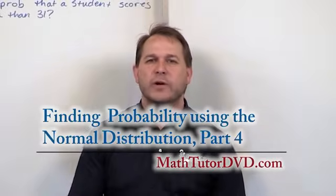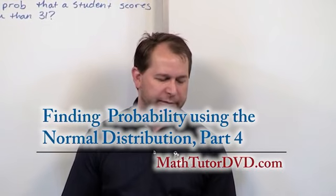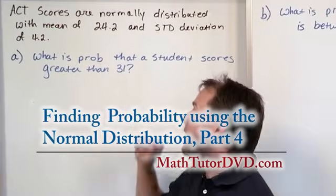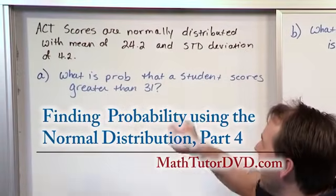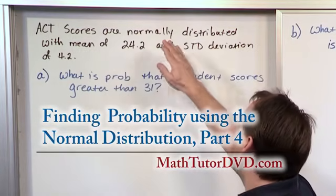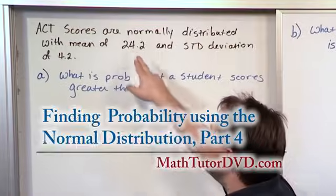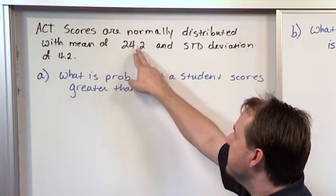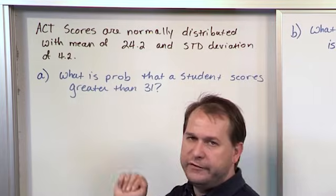Hello, welcome to this lesson. Here we're going to continue working these problems with the normal distribution and we have one up here on the board. We see that ACT scores, which is a standardized test, are normally distributed with a mean of 24.2, that's a mean test score, and a standard deviation of 4.2.